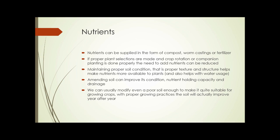Nutrients can be supplied in the form of compost, worm castings, or fertilizer, as well as other ways such as compost tea. If proper plant selections are made and crop rotation or companion planting is done properly, the need to add nutrients can be reduced — usually not eliminated when talking about relatively intensive agriculture — but we can greatly reduce the need to add outside inputs.